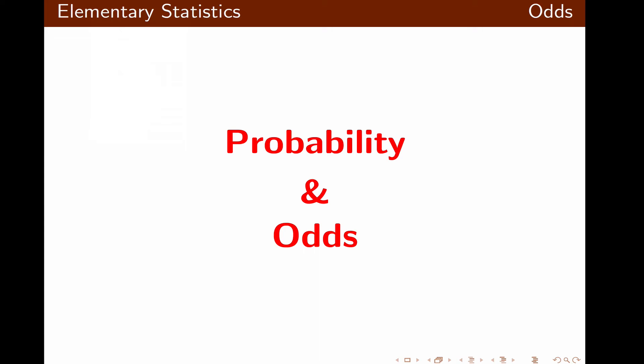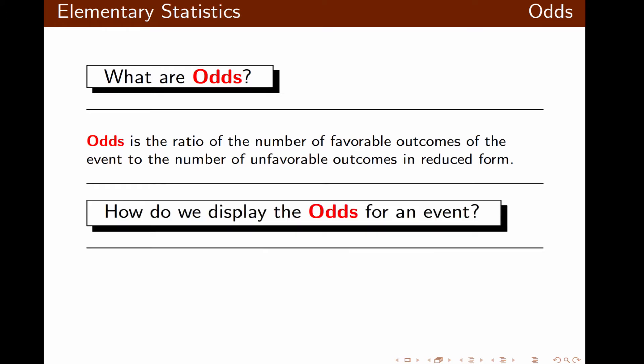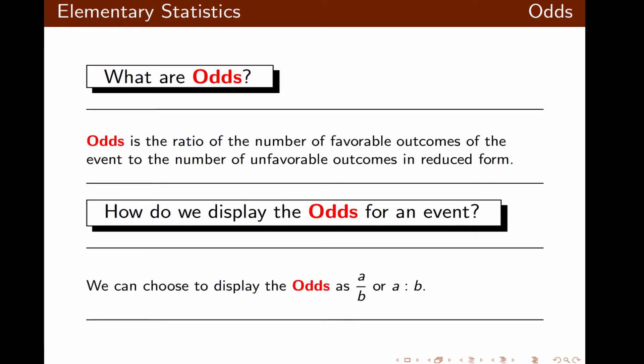In this topic we're going to talk about probability and odds. First, let's take a look at the definition of odds. Odds is a ratio of the number of favorable outcomes of an event to the number of unfavorable outcomes, written in reduced form. We can display the odds in the form of a fraction a over b, or using colon notation a colon b.